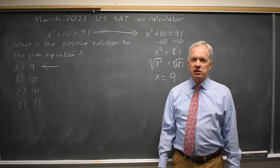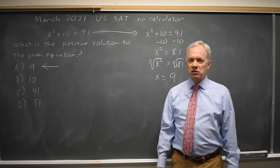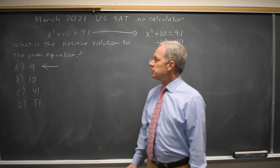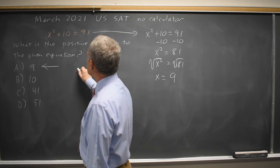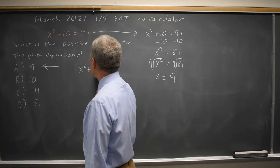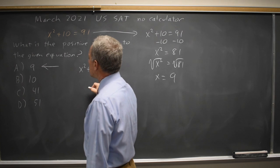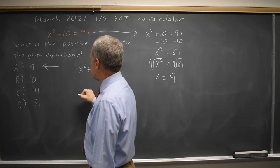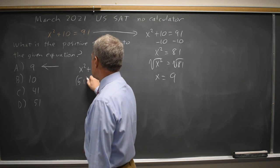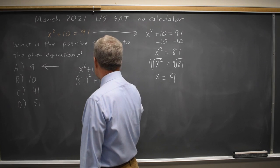An alternate approach that is slightly slower but also works is to plug in our answer choices. Given x²+10=91, I can try plugging in, for example, 51. 51²+10, we're asking,